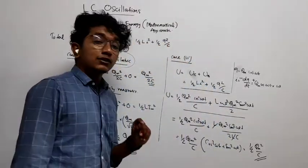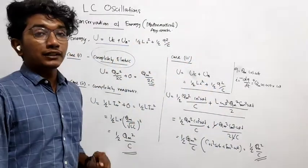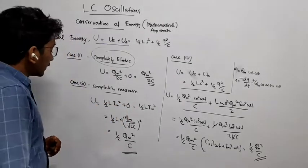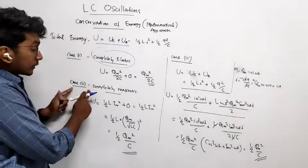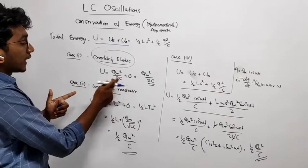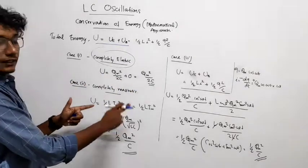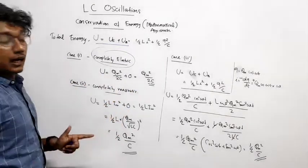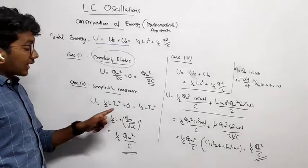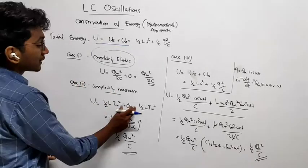That is why we are trying to approach this mathematically to prove in that way. So then case two, that is completely magnetic energy. So we know that U is equal to Ub only. So how much will be that? Half into LIm squared. Im is maximum. Plus zero.